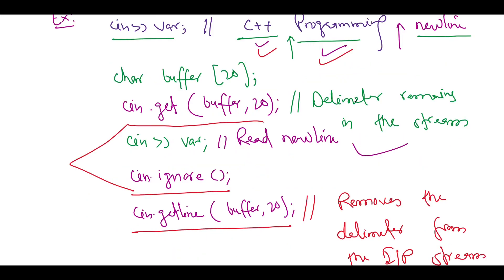So either you can use cin.get together with cin.ignore, or you can use cin.getline — both will read the whole statement. I hope this is enough discussion for stream input and output operations. In the next tutorial we are going to talk about stream manipulators. If you have any doubt or query, you can write in the comments and I will try to respond as soon as possible. See you in the next video — thank you so much.